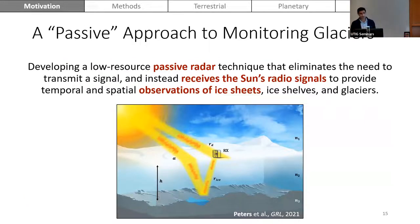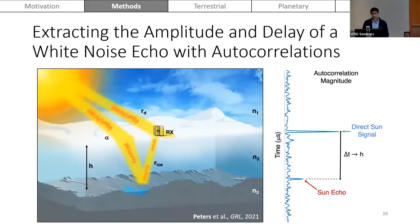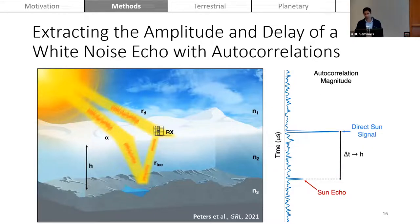That's where my work comes in: I'm developing a low-resource passive radar technique that eliminates the need to transmit a signal and instead receives ambient radio emissions such as the sun's radio signals. The technique works by receiving the direct path from the ambient radio source as well as the path that propagates through the ice, reflects off the bed, and is received at a delay time later. Using an autocorrelation-based technique and cleaning up the signal for radio frequency interference, you can extract a direct sun signal and a sun echo, then use the relative delay time to map to an ice thickness measurement.